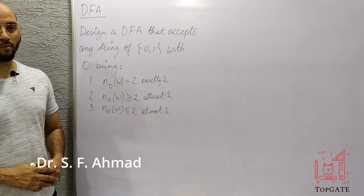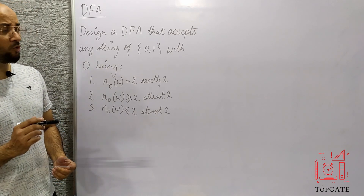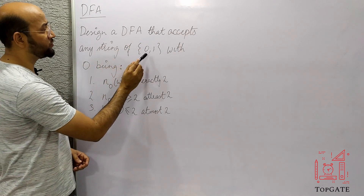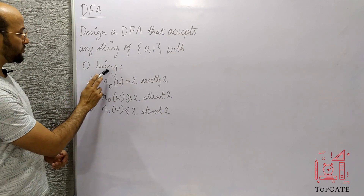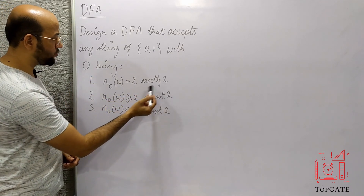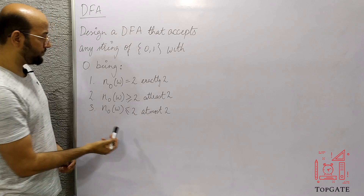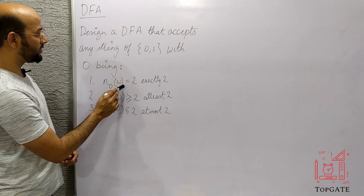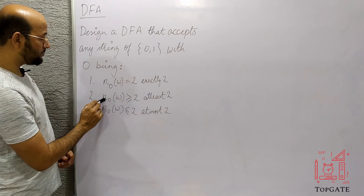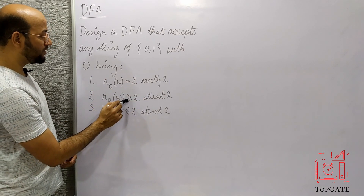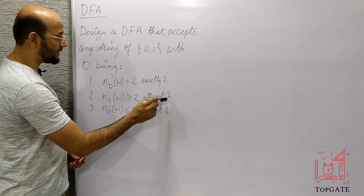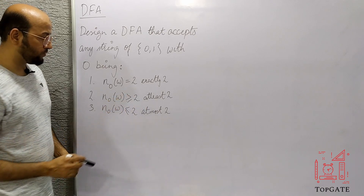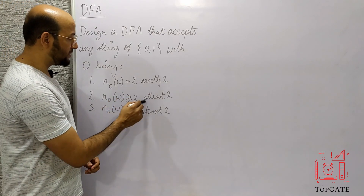Hello students, welcome to the channel TopGate. In this video I will discuss three more problems of DFA: to design a DFA that accepts any string of 0,1 with the number of zeros being exactly 2, at least 2, and at most 2. So we will design a DFA for all three cases.